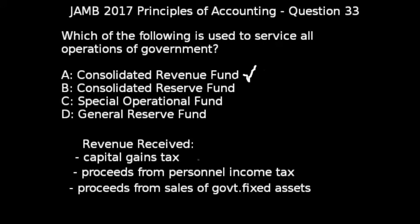The revenues paid into the Consolidated Revenue Fund include capital gains tax, proceeds from personal income tax, and proceeds from sales of government fixed assets. These are all revenues that are paid into the Consolidated Revenue Fund.